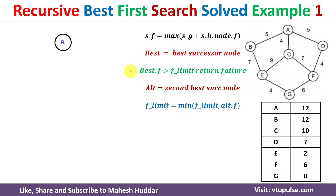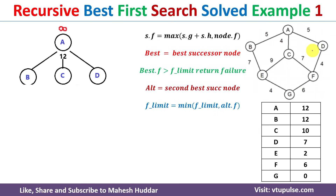We start with the initial node A. First we check whether A is the goal node — it is not. So we set the f-limit for A. Initially we set f-limit equal to infinity. We then find the successors of A: B, C, and D. We also calculate f(A) = g(A) + h(A), where g(A) = 0 and h(A) = 12, giving f(A) = 12.